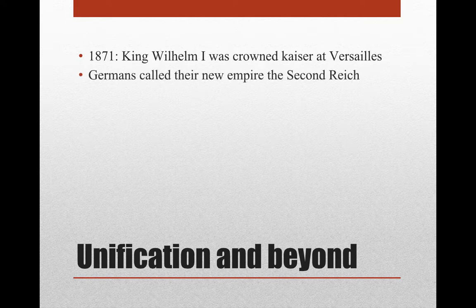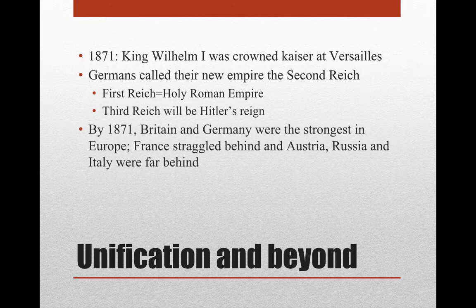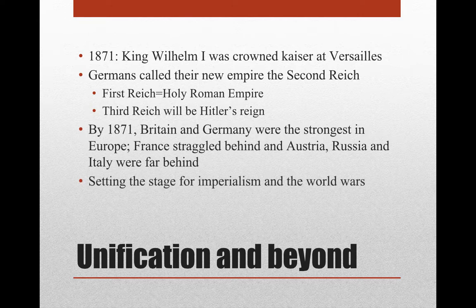This is going to be the start of what the Germans call the Second Reich. We're probably more familiar with the Third Reich, which was Hitler's plan for German dominance in Europe. The First Reich was the Holy Roman Empire, and then the Third Reich will be Hitler's reign. By 1871, Britain and Germany were the strongest in Europe in terms of nation states. France straggled behind, and Austria, Russia, and Italy were all very far behind. We're really going to see tensions develop between Germany and Britain as the two struggle for dominance in Europe. This is setting the stage for imperialism and certainly the conflict that becomes World War I and eventually World War II.